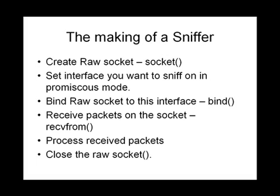Now let's look at how a sniffer is made. A sniffer is a program which receives all packets the network card can see and extracts meaningful information from them. The first step is to create a raw socket using the socket call, and before or after this we can put the interface into promiscuous mode either programmatically or using the ifconfig command. After that we bind to the interface from which we want to receive raw packets — for example, the eth0 interface. Then we start receiving packets from that socket using the recvfrom call, as we do for UDP. Finally we process those packets, look at the headers and data, maybe store something, and then close the raw socket.